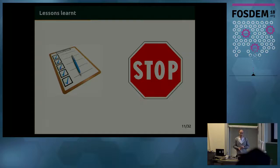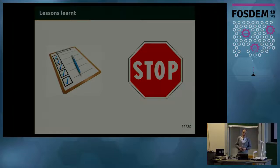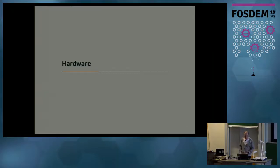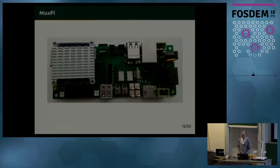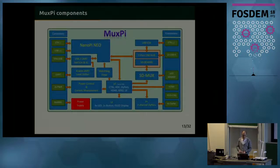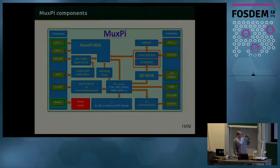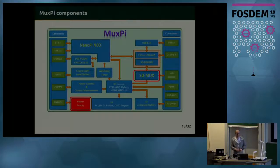We wanted to have as few external interfaces connecting the controlling board and the external world as possible, and also wanted unified access to the devices under test. That's why we designed the MuxPi board, which consists of multiple designs already in use. It is equipped with only two external interfaces: power supply and Ethernet connection for network accessibility, and the good old microSD card multiplexer we had already used before.